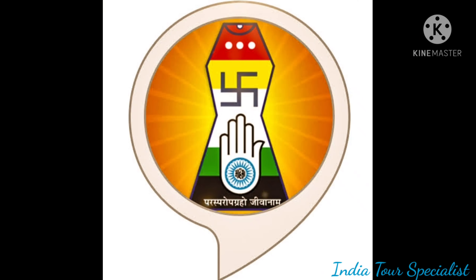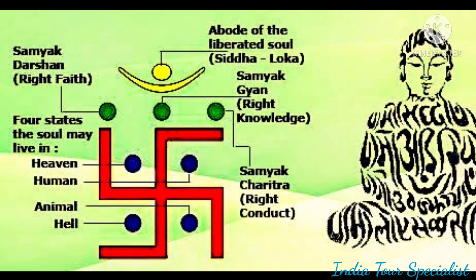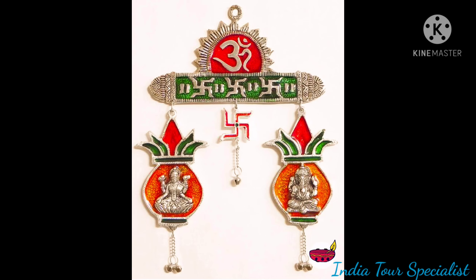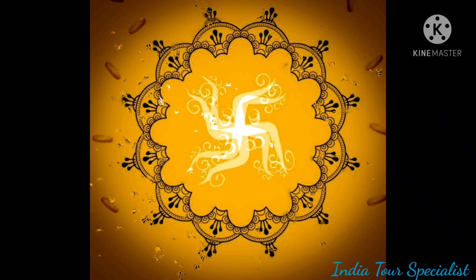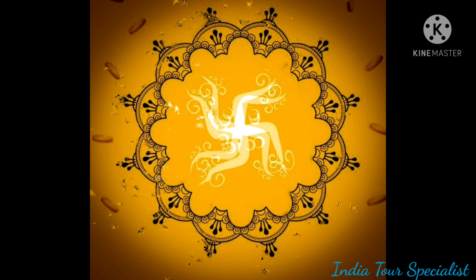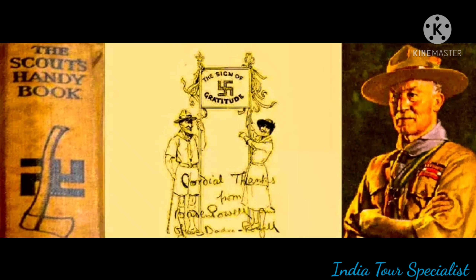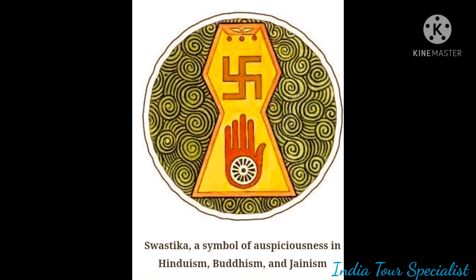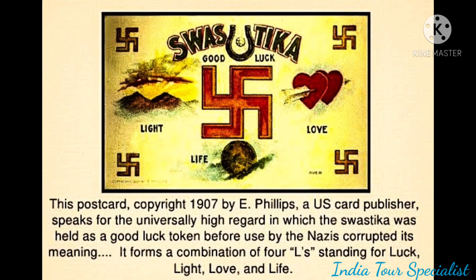In Jainism, the Swastika is revered as a symbol associated with the seventh Tirthankara, Suparshvanath. The four arms of the Swastika symbolize the four possible places where one could be reborn or reside after death. While in Hinduism, the Swastika is a symbol of the wheel of the life cycle. We can say that the Swastika is the oldest cross and emblem in the world, formed by the combination of four L's — which stand for luck, light, love, and life.